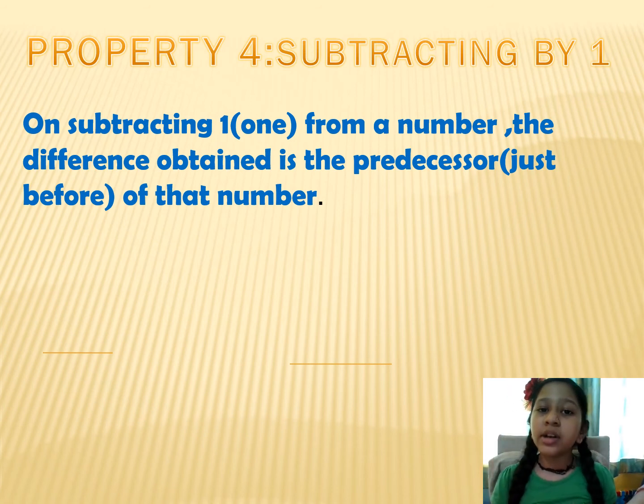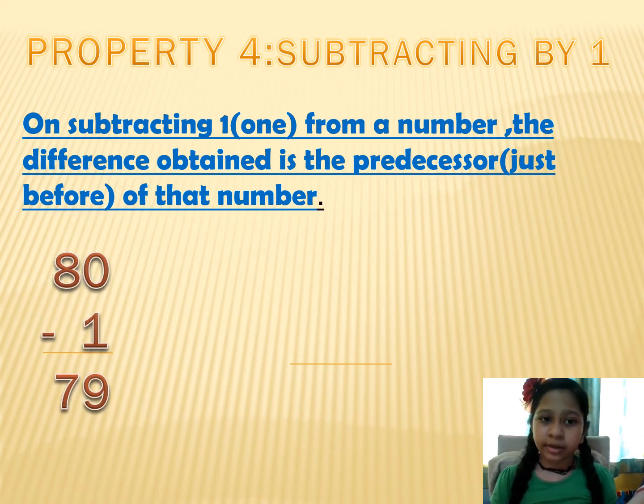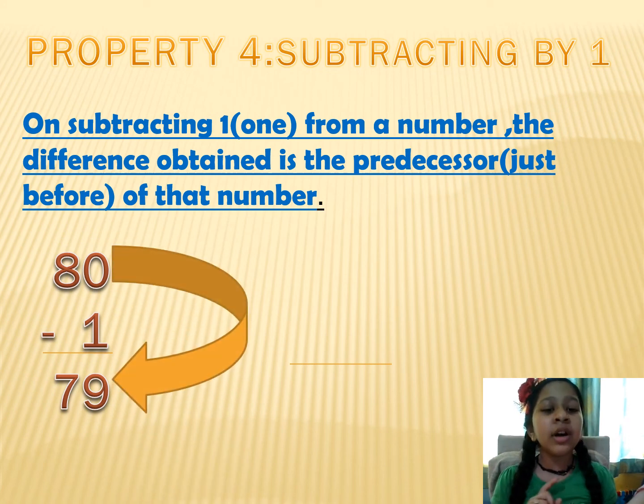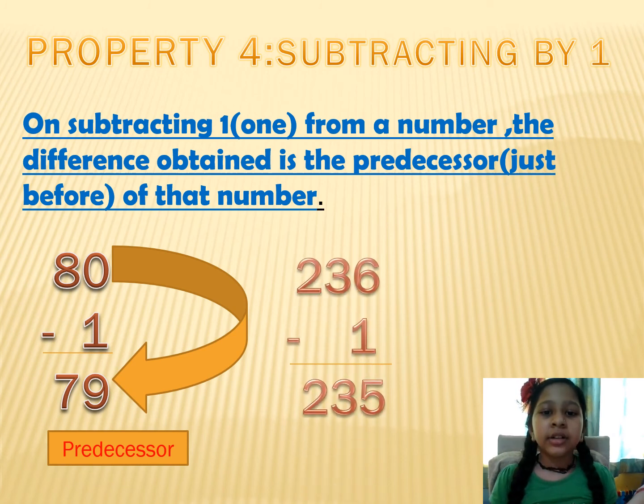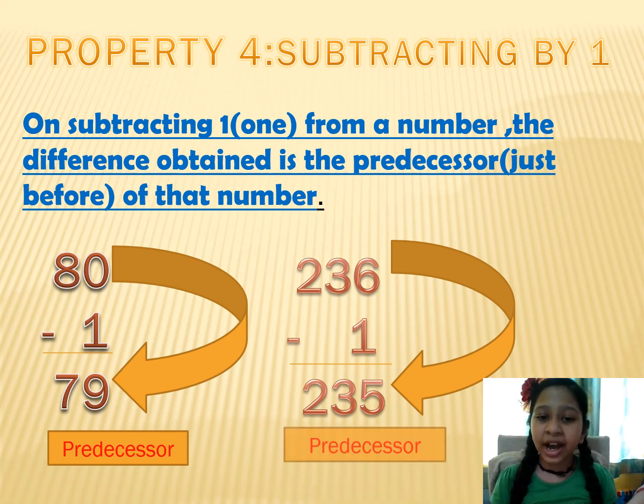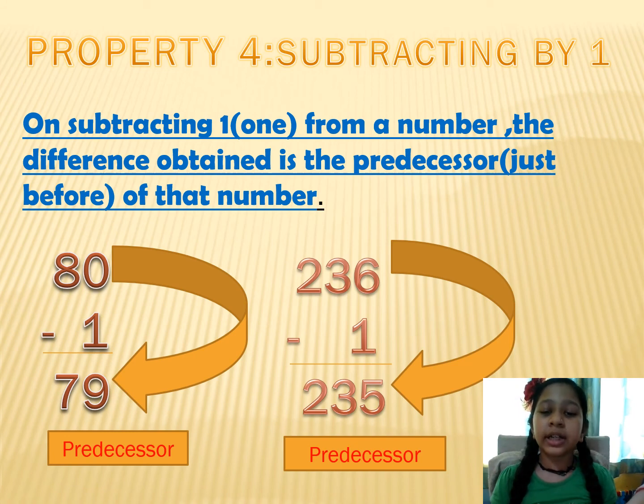Property 4. Subtracting by 1. On subtracting 1 from a number, the difference obtained is the predecessor of that number. Like 80 minus 1 is equal to 79. 79 is the predecessor of 80. 236 minus 1 is equal to 235. 235 is the predecessor of 236.